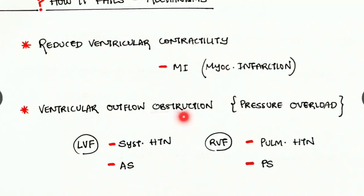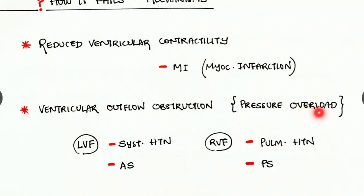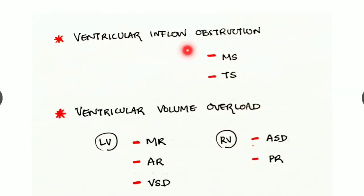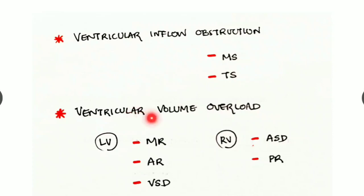Pulmonary hypertension and pulmonary stenosis cause right ventricular failure due to obstruction of the outflow tract. In all these cases there is increased pressure overload. Heart failure can also be due to ventricular inflow obstruction — examples are mitral stenosis and tricuspid stenosis.